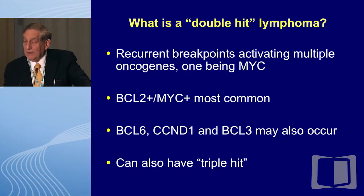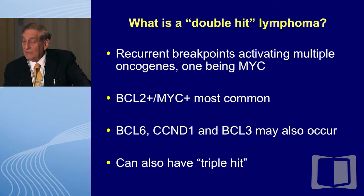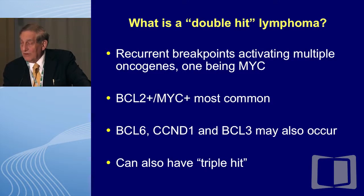So what is double hit lymphoma? It's recurrent breakpoints activating multiple oncogenes, but one has to be the MYC gene. BCL2 and MYC is the most common combination, but you can have BCL6 and the mantle cell gene. BCL3 may also occur. And I have seen in my practice — and I think many of you as well — the triple hits where you can have two other gene abnormalities in addition to BCL2.